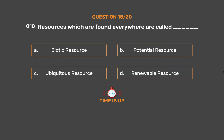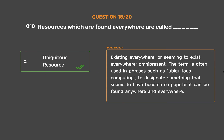The correct answer is Option C: Ubiquitous resource. Ubiquitous means existing everywhere, or seeming to exist everywhere — omnipresent. The term is often used in phrases such as ubiquitous computing, to designate something that seems to have become so popular it can be found anywhere and everywhere.